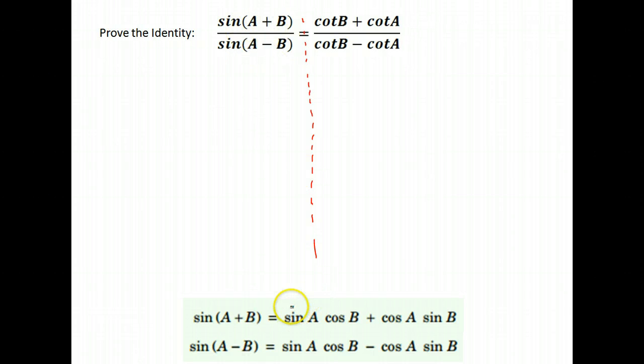So sine A plus B is sine A cosine B plus cosine A sine B. And since they were nice enough to even use the same letters, sine A cosine B plus cosine A sine B over sine A minus B, which is sine A cosine B minus cosine A sine B.